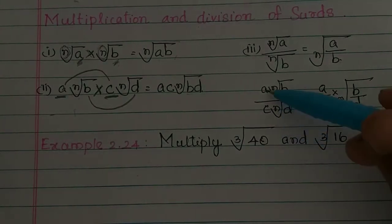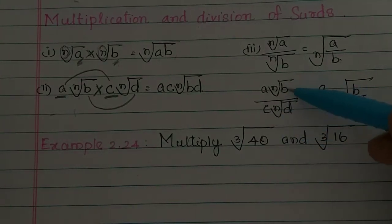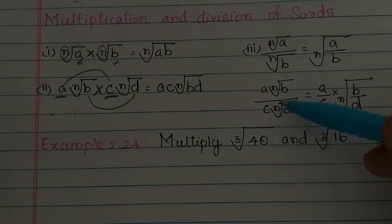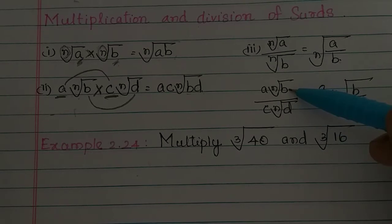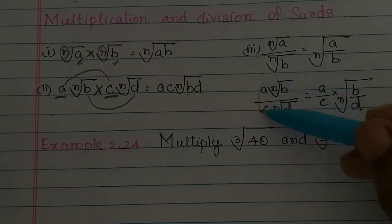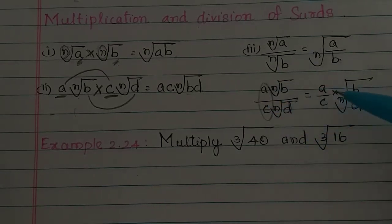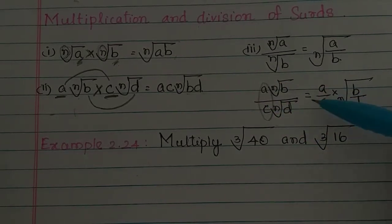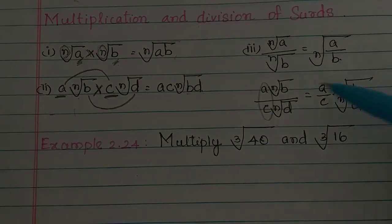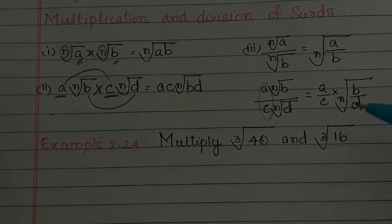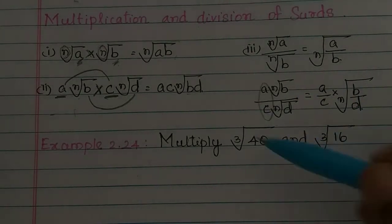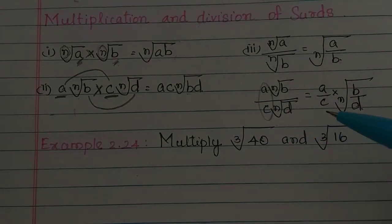For division: a·n√ divided by c·n√ — the coefficients are divided, giving (a/c)·n√ of the quotient of the radicands. This is very easy.